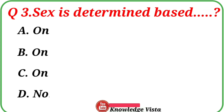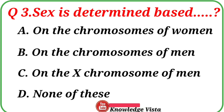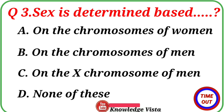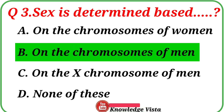Question No. 3: Sex is determined based on what? Your options are: A. On the chromosomes of women and men, B. On the chromosomes of men, C. On the X chromosome of men, D. None of these. Correct answer is Option B, on the chromosomes of men.